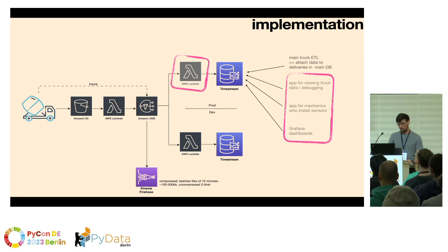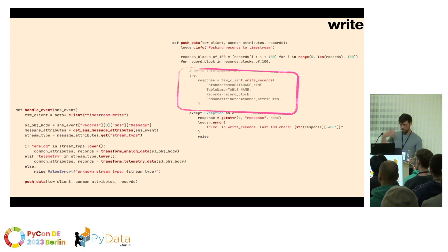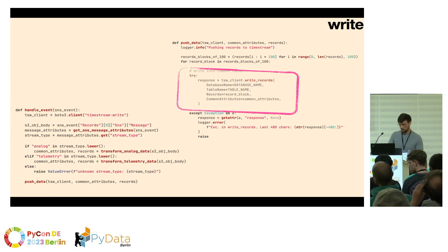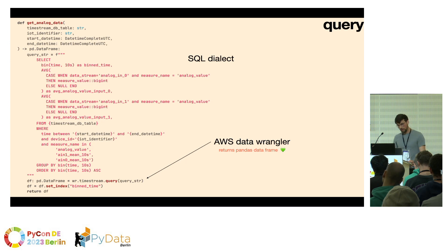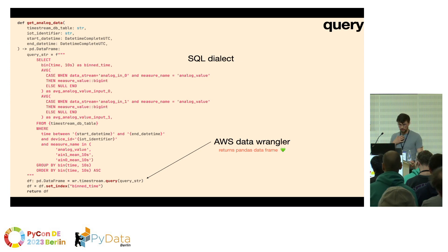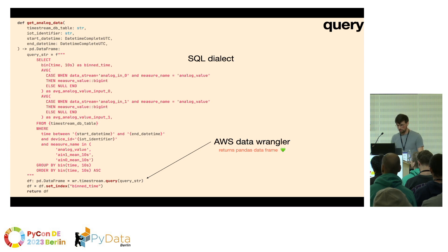I wanted to show how to write with the Lambda function and a few of the apps. On the left side you basically see the function that's called first. There's of course some transformation of the data necessary that I don't show here. On the right, this is how you write to Timestream — and this is all Python, no special dialect needed. And this is one of the actual queries that we use. Here you can see that for querying you still need a language different from Python: they have an SQL dialect, which is a good thing because many of our developers already know SQL. There's the AWS Data Wrangler tool that returns a Pandas DataFrame, which makes it really convenient.